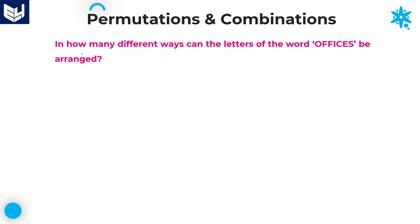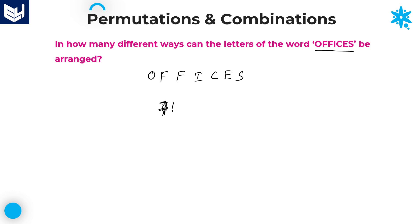Let's move on to the next question: in how many different ways can the letters of the word OFFICES be arranged? Here the word given is OFFICES. Total letters: 1, 2, 3, 4, 5, 6, 7 — seven letters. Seven letters can be arranged in 7 factorial ways.